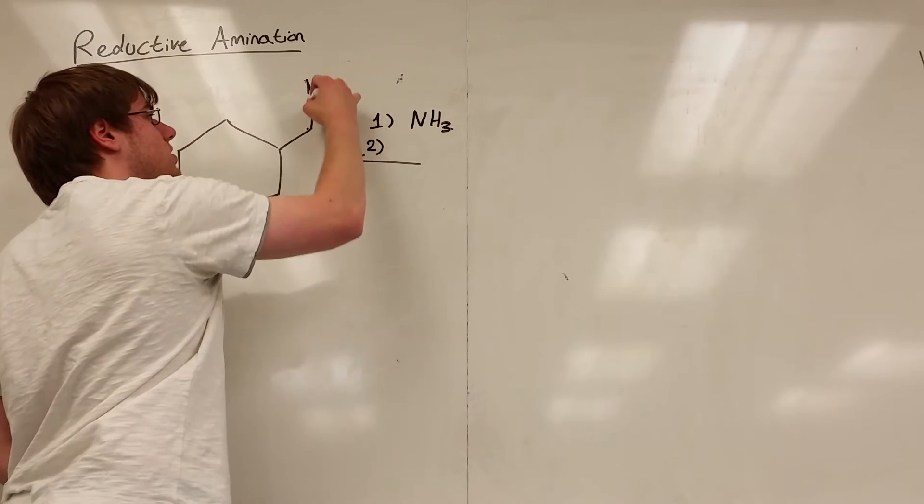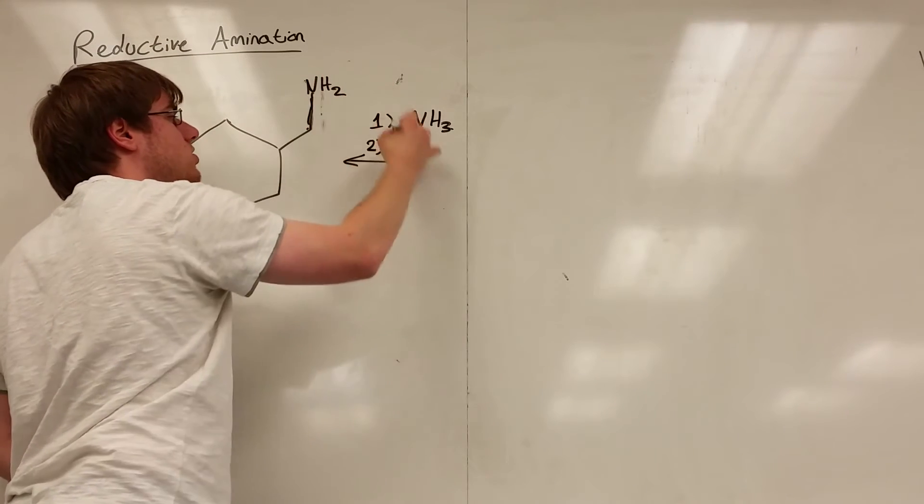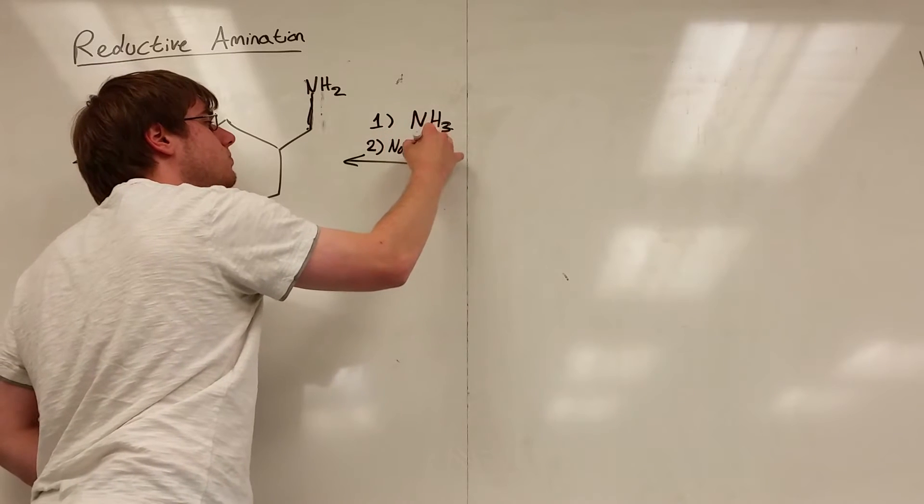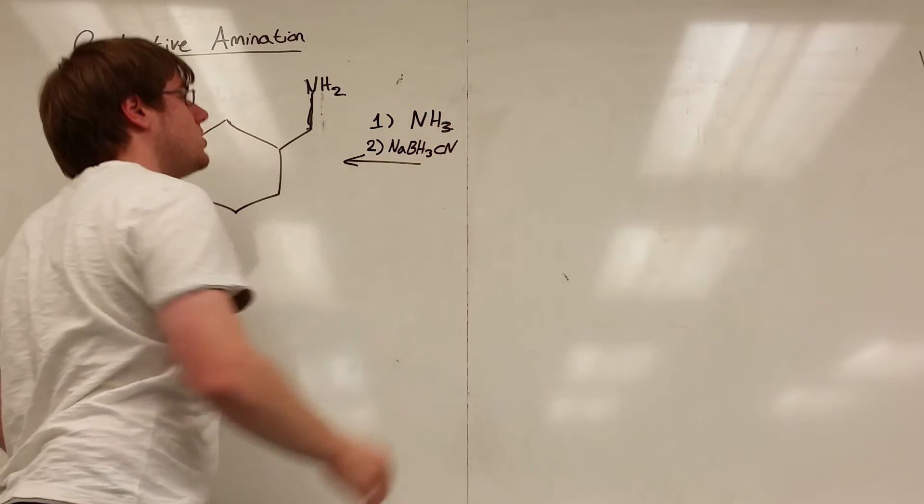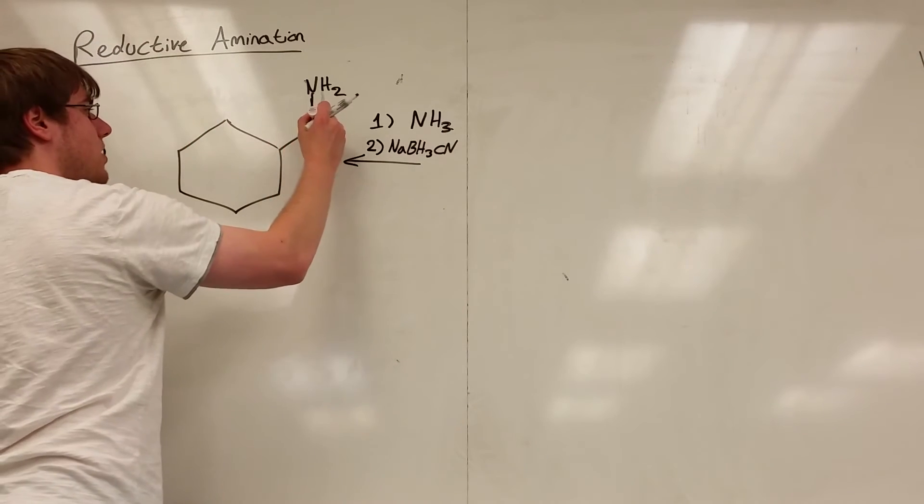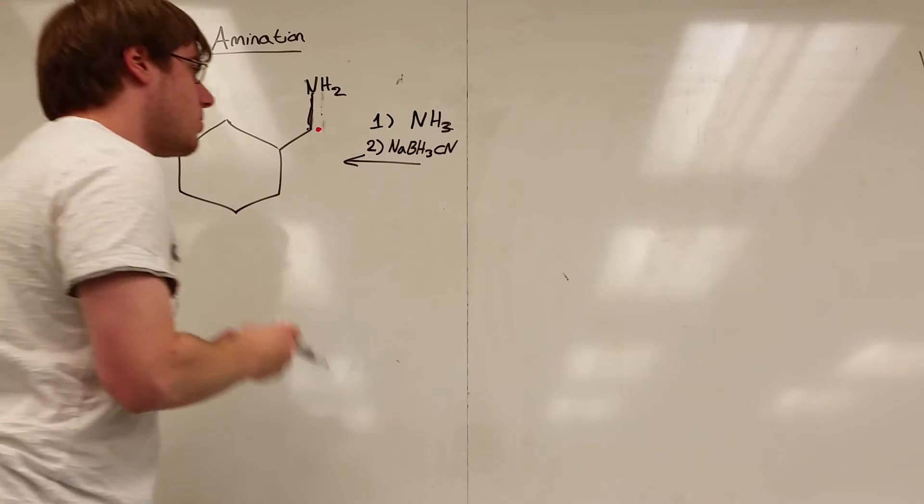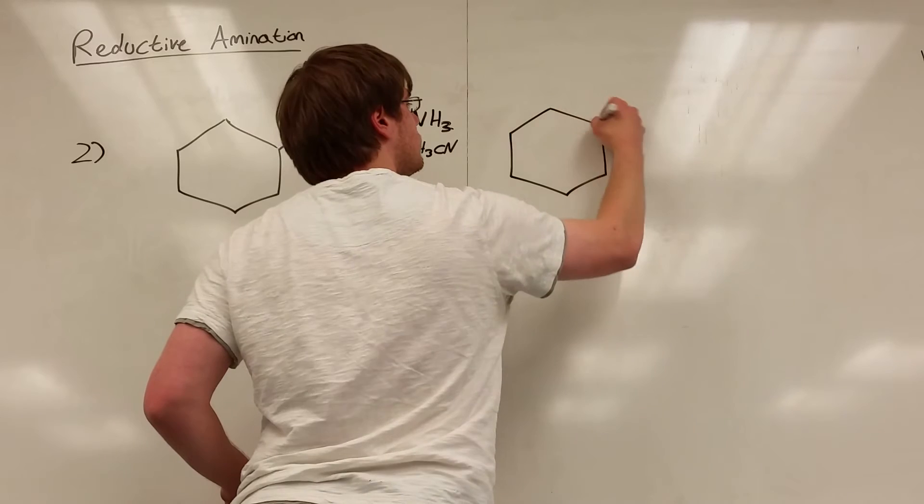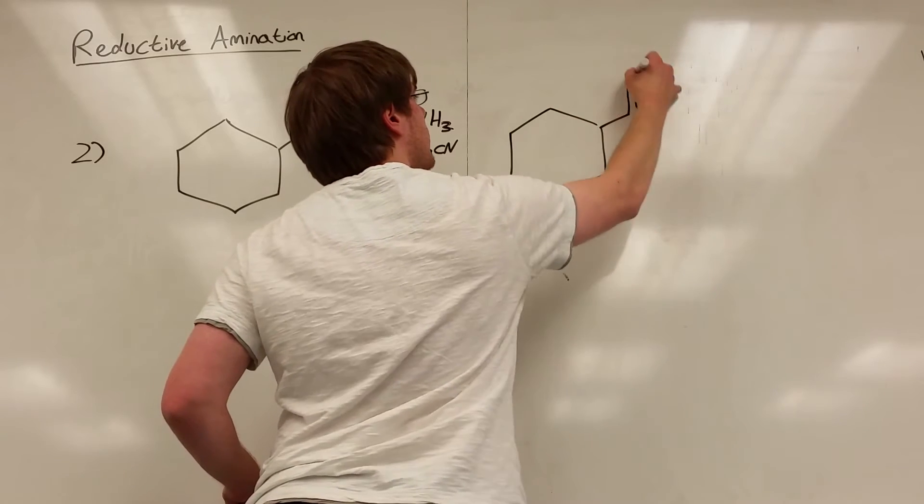And then step two, you're going to do your reducing agent. So either LiBH3CN or NaBH3CN. And what does this go back to? Well, the carbon that the nitrogen was attached to by that single bond, that red dotted carbon over there, will now have a C double bond O on it. So I would have this. Now notice something.